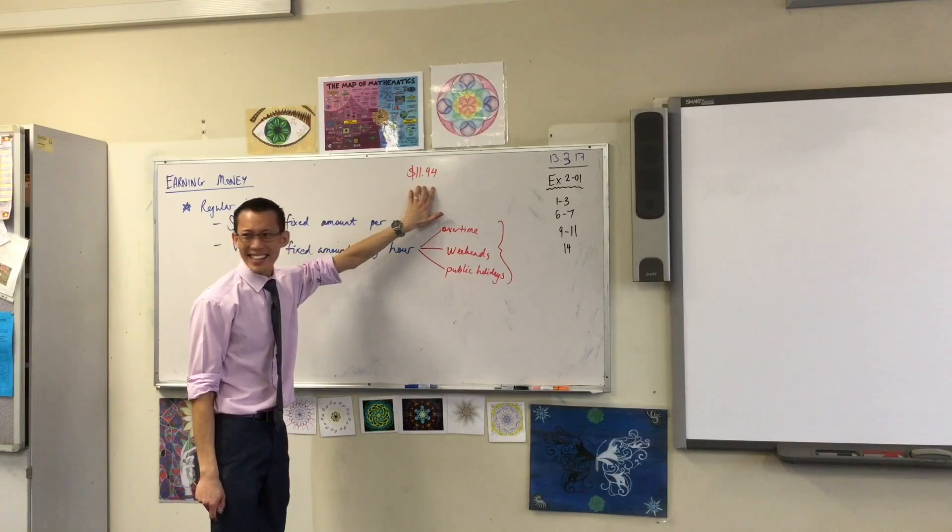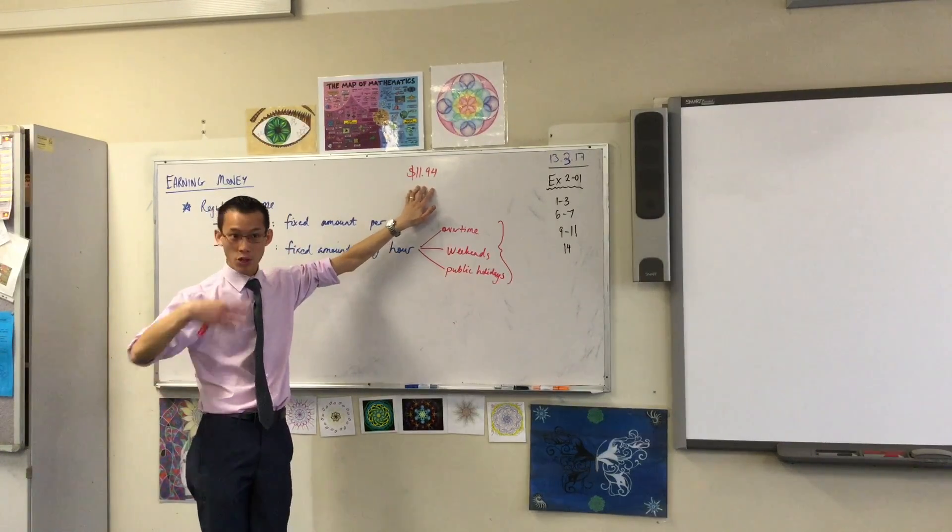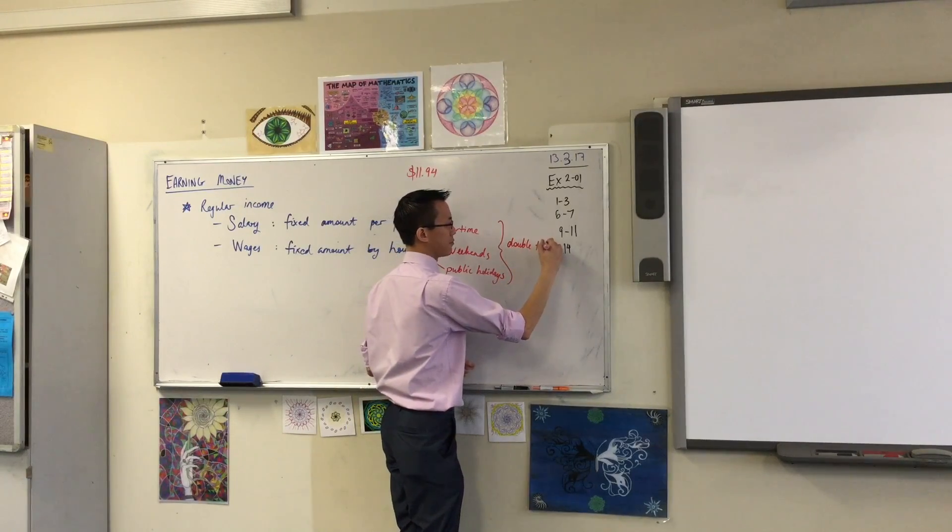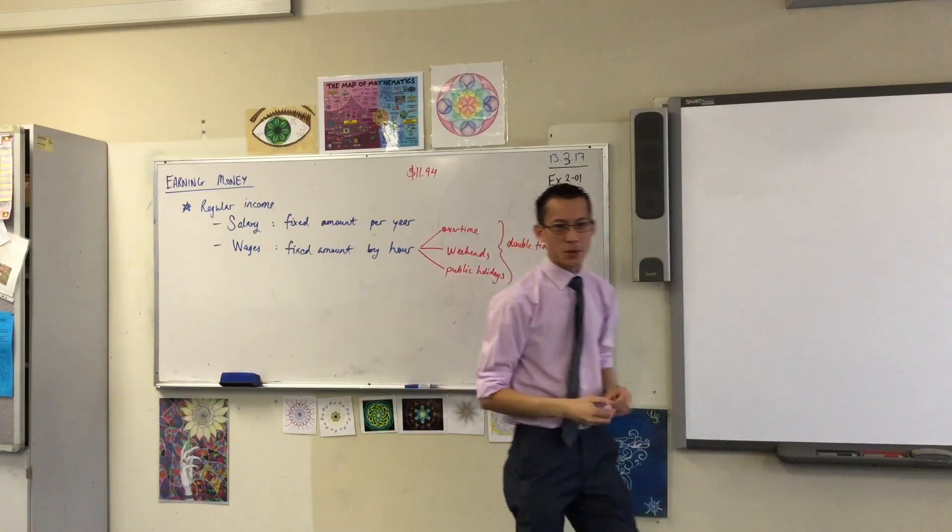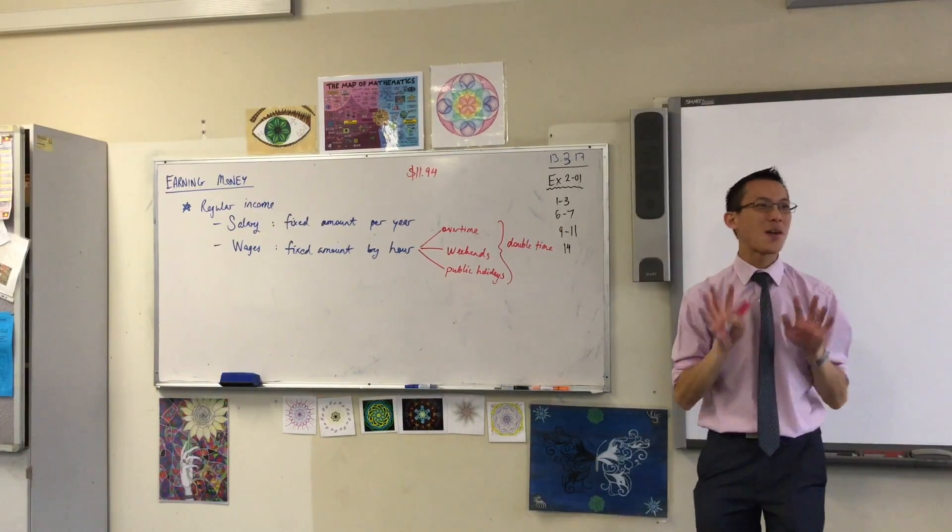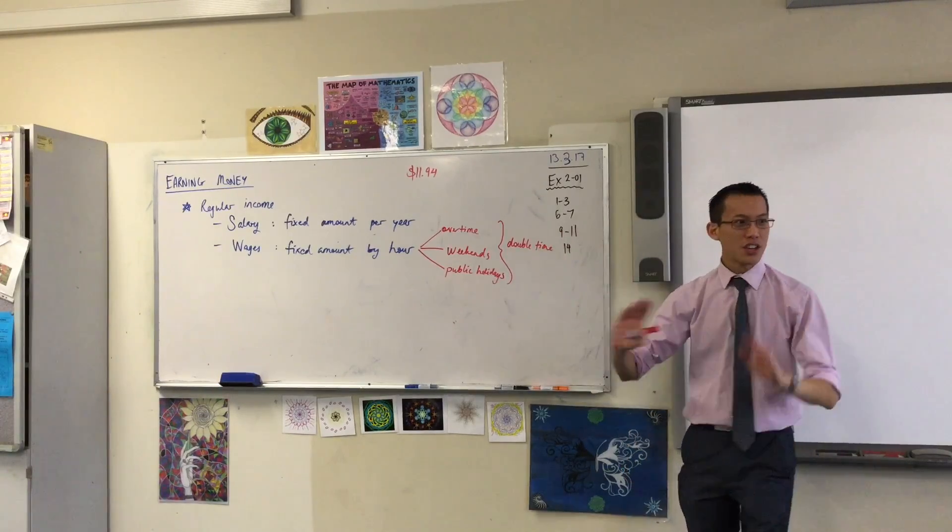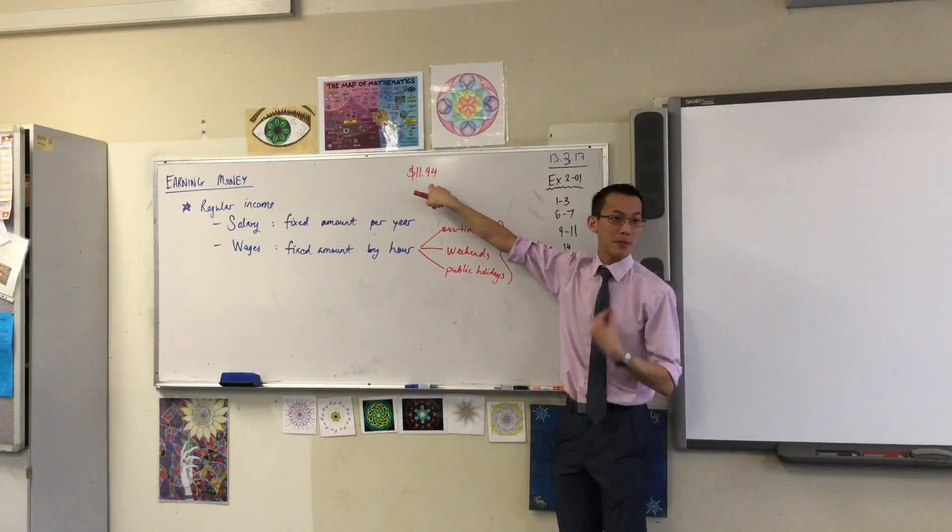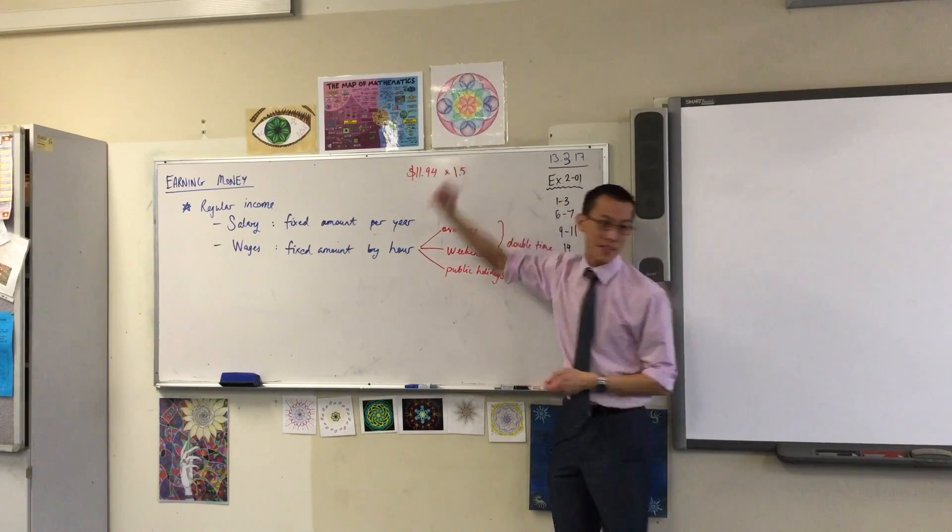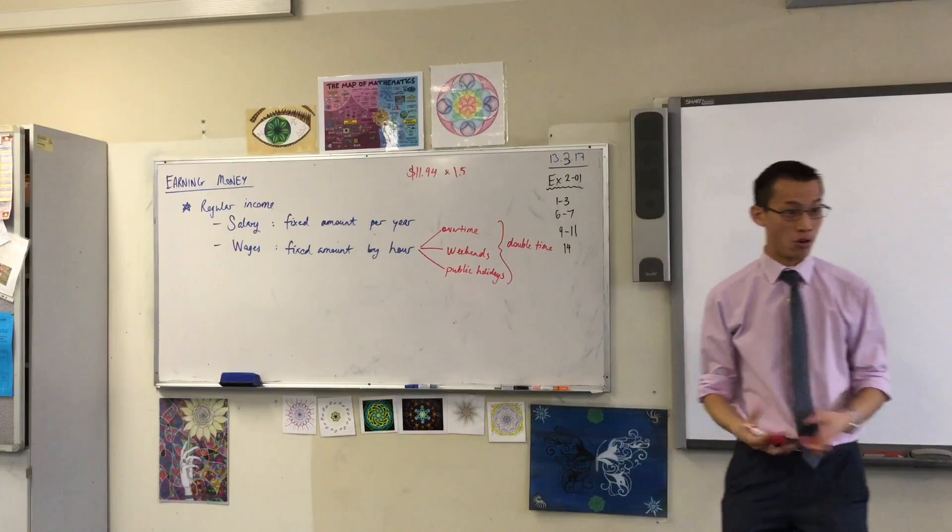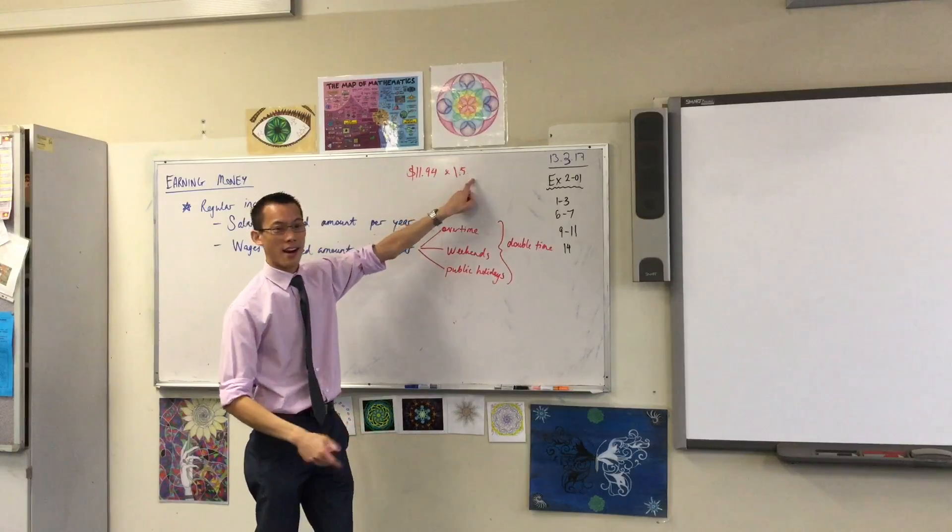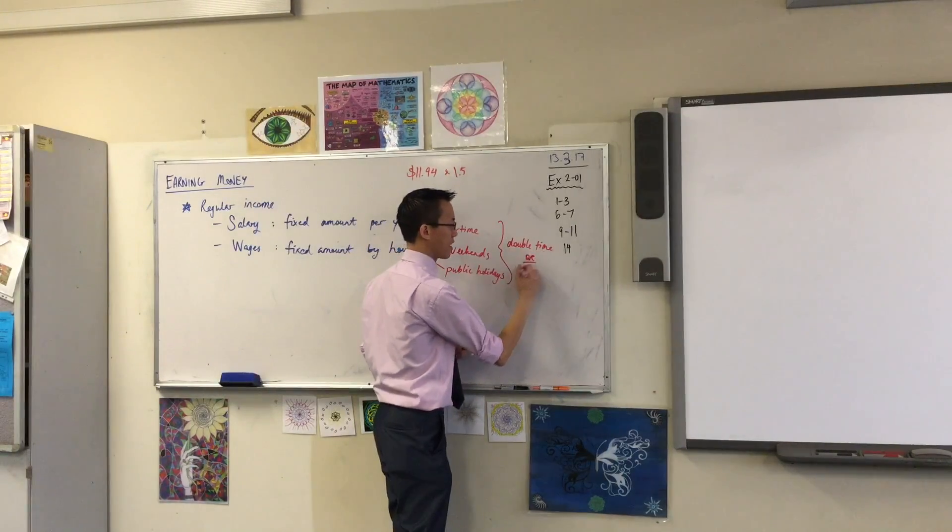$23.88. I think obviously you can check this on your calculator here. We call that double time so I'm going to write that here. Double time $23.88, except for Harry that's a lot of money. So sometimes employers are not quite willing to pay that much so they do it in between. Instead of this times 2 they'll multiply it by 1.5, that's still better than what you're normally getting but it's not as good as double time. We call that because it's this and a half, we call it time and a half.